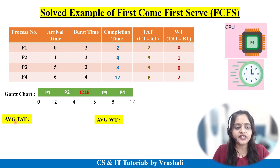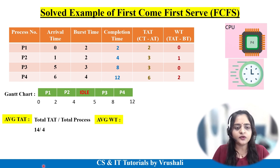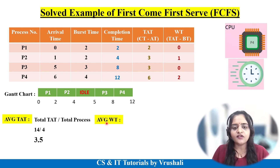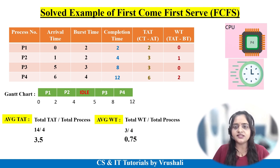Now find the average turnaround time: total turnaround time divided by total number of processes. Total turnaround time = 2 + 3 + 3 + 6 = 14; divided by 4 processes = 3.5 units. Average waiting time: total waiting time divided by total processes. Total waiting time = 0 + 1 + 0 + 2 = 3; divided by 4 = 0.75 units.